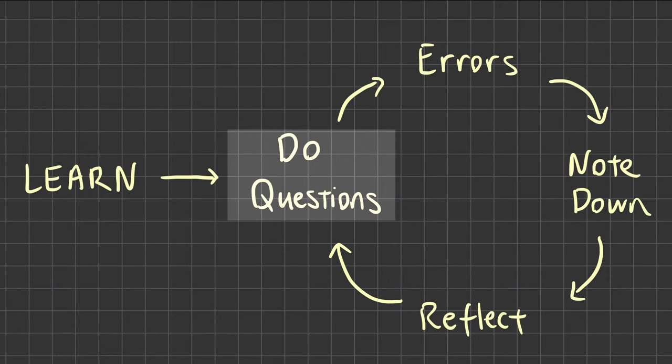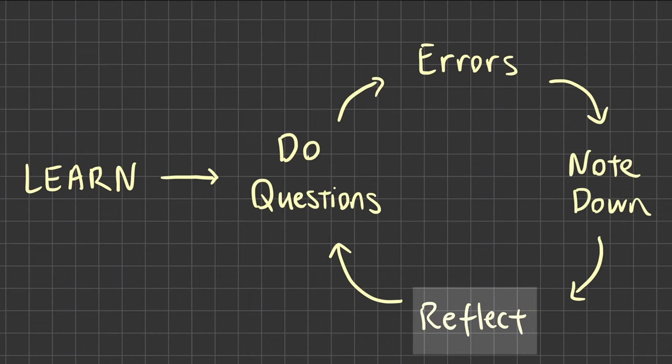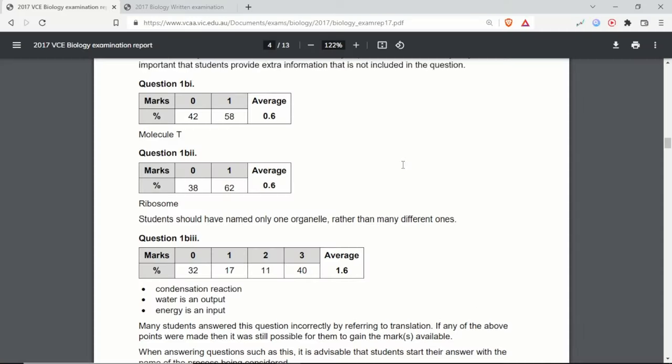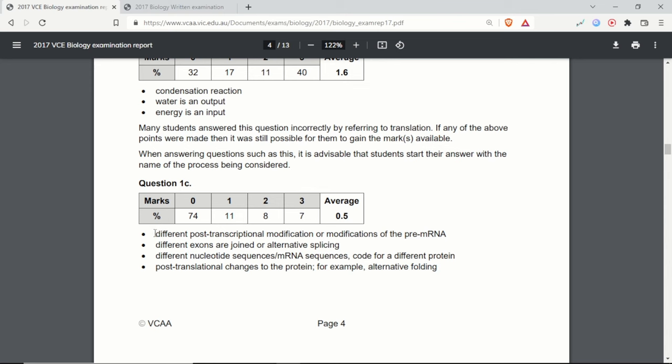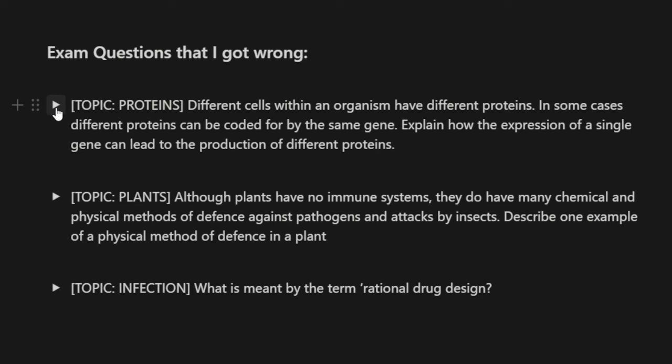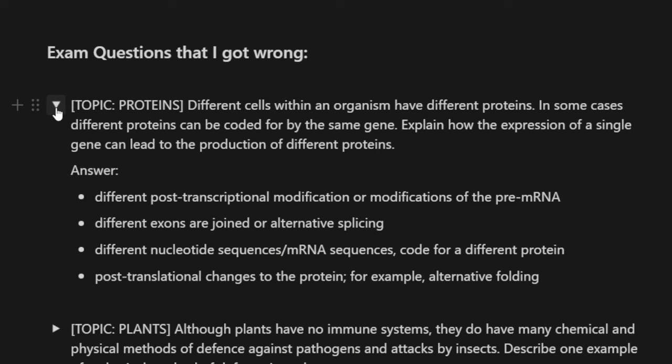Even after a set of well-done notes and visuals, there were still sometimes holes in my understanding. This wasn't because I was careless — it's simply the fact that we can't know everything. However, the good news is we can fill in most of the gaps through application. From doing questions or practice exams, we can look at any questions we got wrong, add them into our notes, reflect upon them, and repeat. I also encourage you to look at the wording of assessors in examiner reports, see what their logic is and how they word particular answers, then use that exact wording in your own notes.